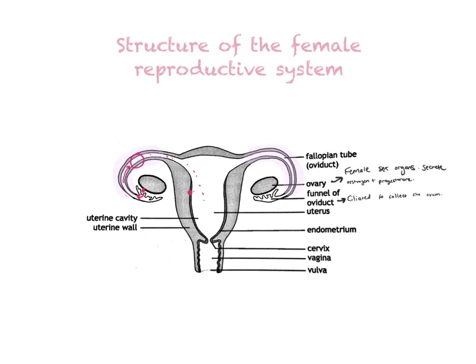Once the egg cell gets into your uterine cavity — also known as the womb, but we call it the uterus — the uterine cavity has a very thick muscular wall, which needs to be muscular for contractions to squeeze the baby out. The innermost layer of the wall, the part exposed to the uterine cavity, is called the endometrium. The endometrium is what thickens monthly and will shed when you have your period.